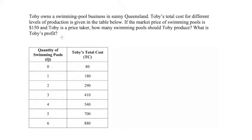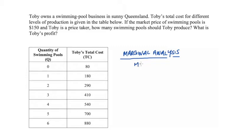The approach we need to use here is sometimes referred to as marginal analysis. In economics we model economic actors as making decisions at the margin — for every marginal or additional action, we only go through with it if the marginal benefit is greater than or equal to the marginal cost. For firms, the benefit of selling one more unit is the additional revenue, so we produce one more unit if marginal revenue is greater than or equal to marginal cost.